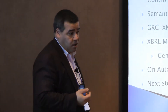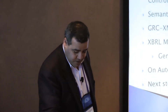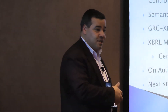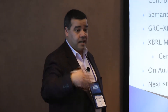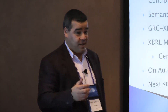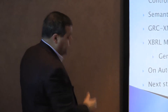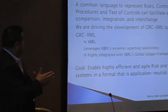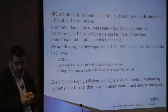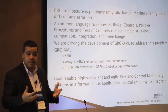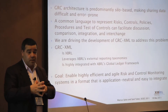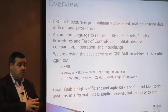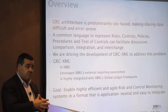OCEG — the Open Compliance and Ethics Group — is a nonprofit organization that took the lead in driving these efforts. It became a provisional jurisdiction of XBRL and is now moving toward direct membership. We asked: are we going to represent GRC information with yet another new standard, or leverage what exists? That's how we started looking at XBRL. If you think about GRC architecture across companies over the years, it's predominantly silo-based.